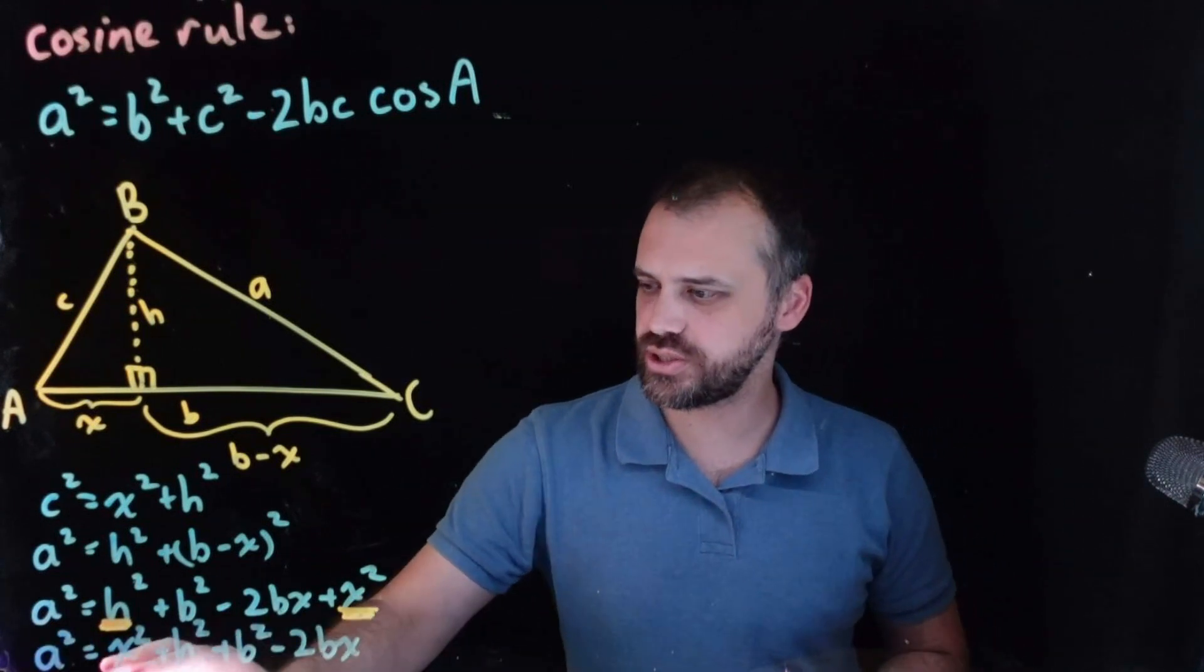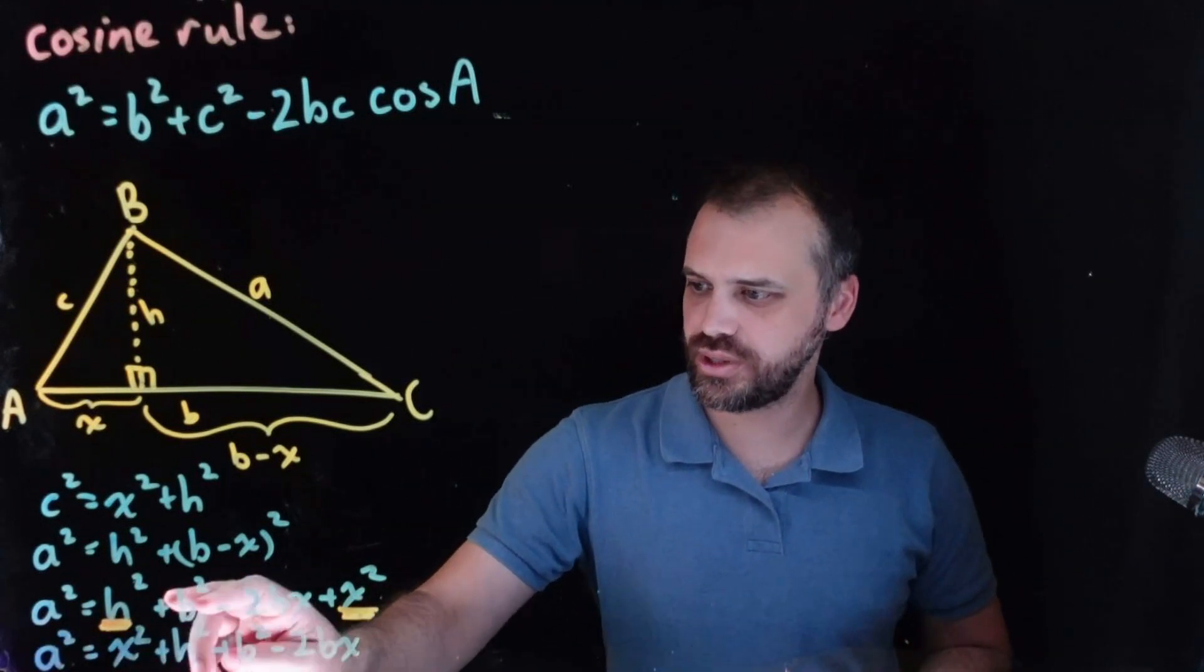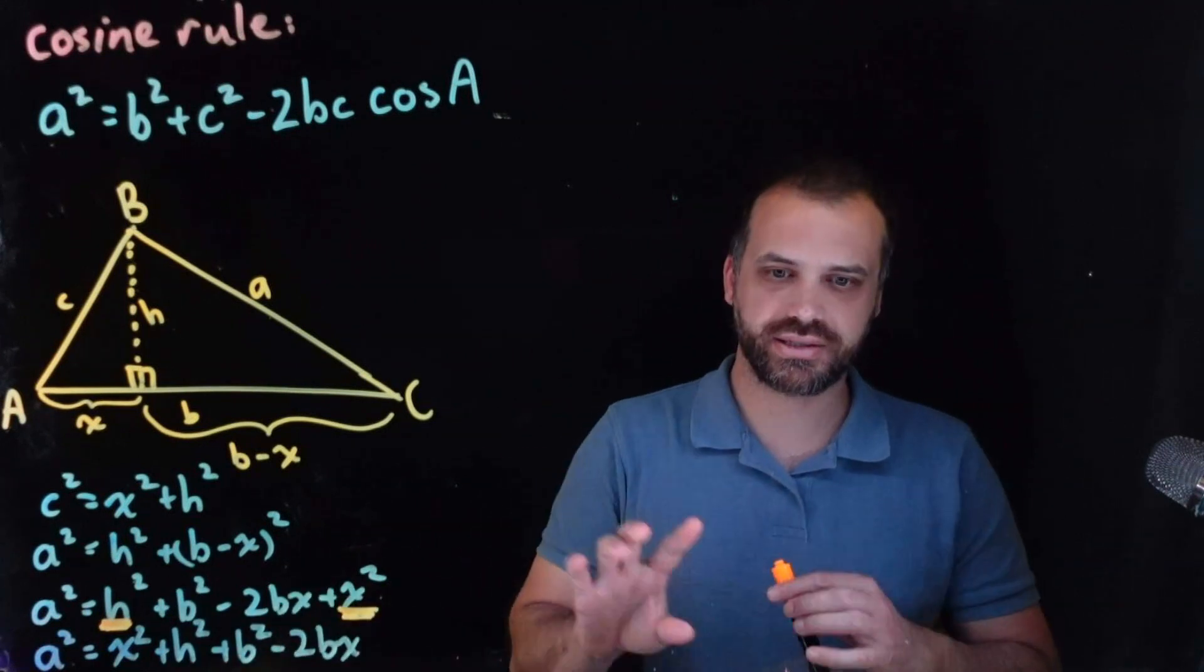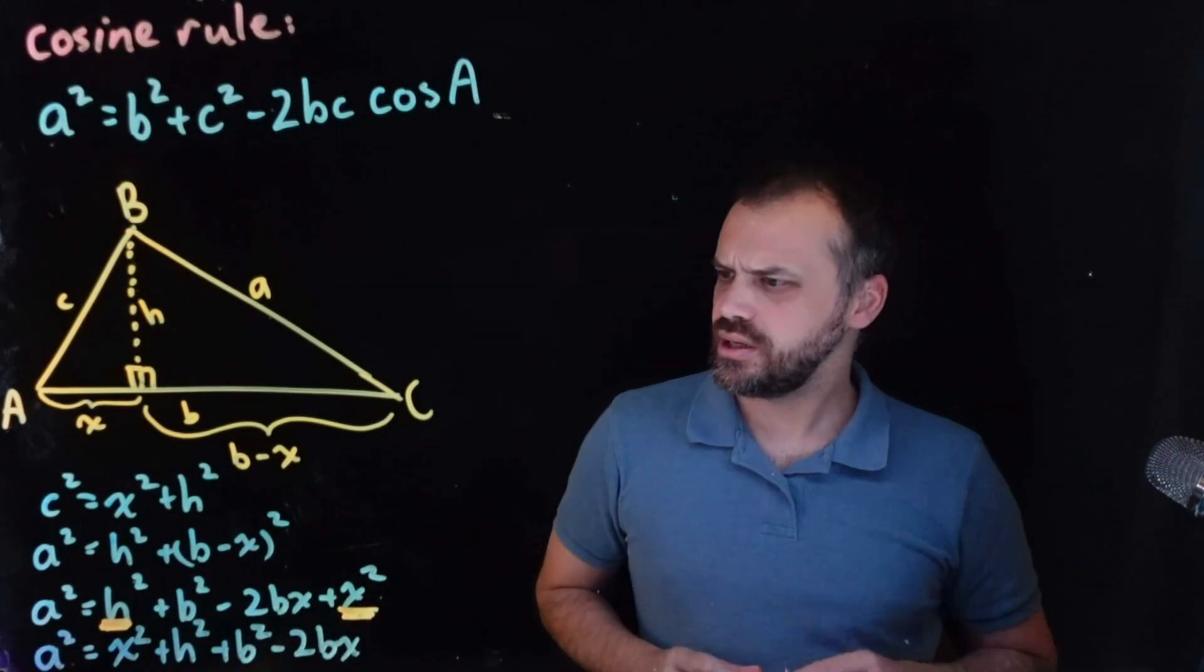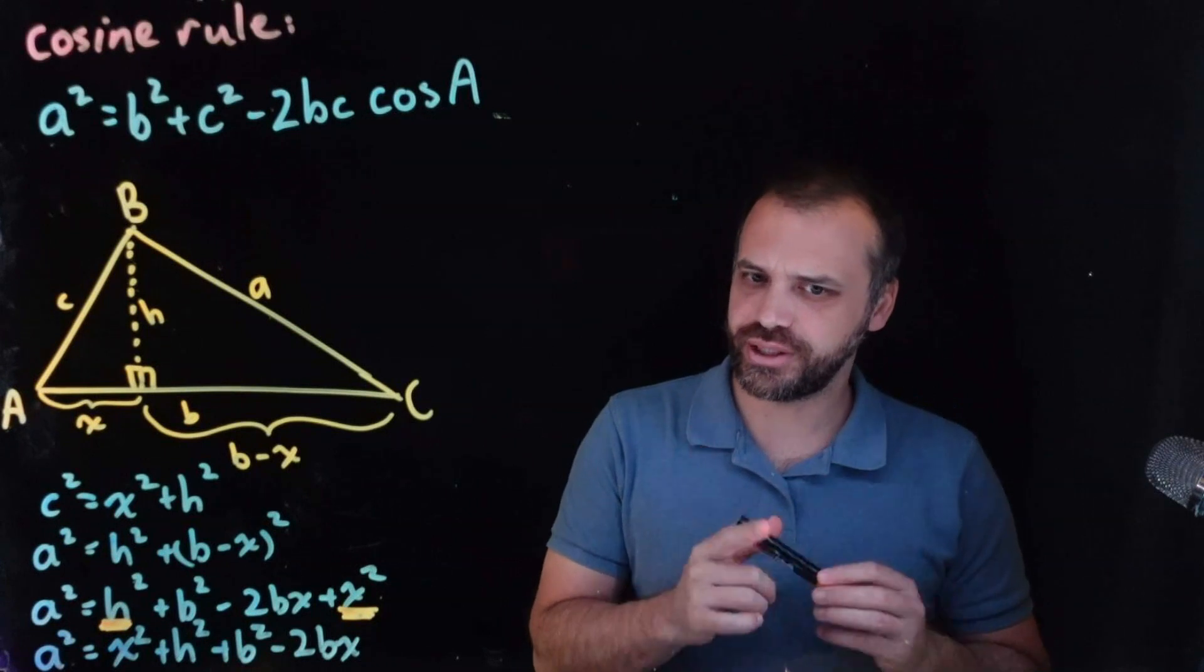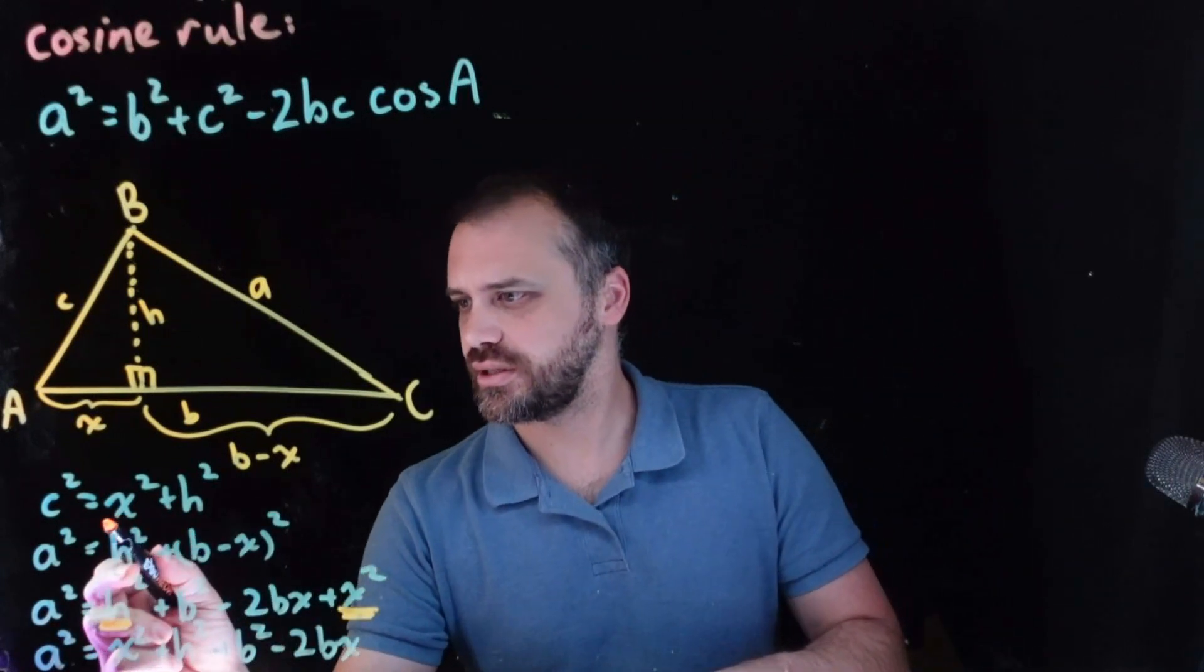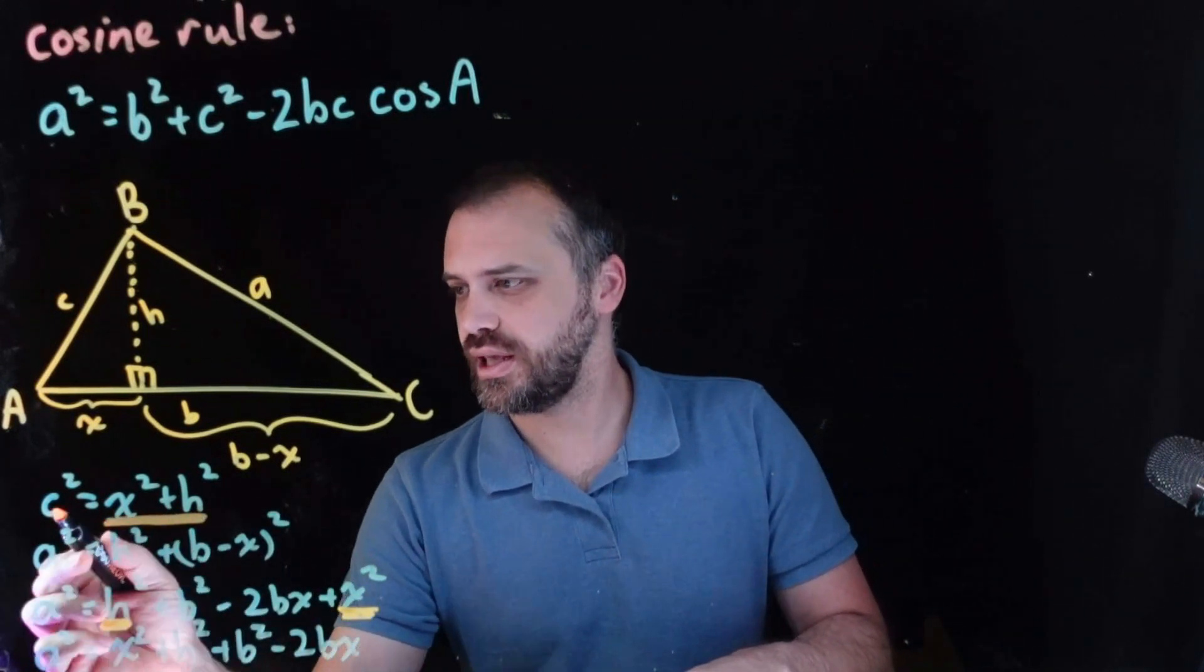All right, so I've done it. I just brought that X squared to the front and then H squared, B squared, negative 2BX. Just brought the X to the front. That's it. This is the cool bit. Look at this.